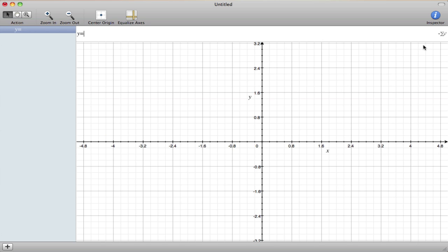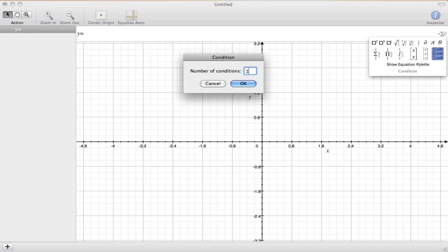So first, start with a piecewise function. Go over here to the sigma value, and you'll see that there's a condition. I always like to do one. I like to have a variety of graphs so I can turn them off and on as I please.